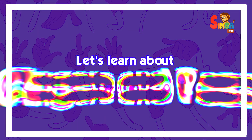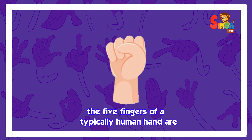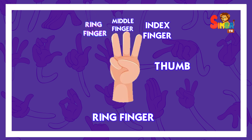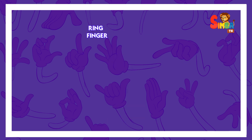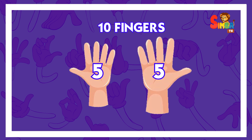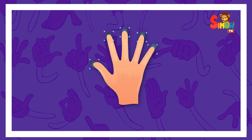Let's learn about fingers and toes. The five fingers of a typical human hand are the thumb, index finger, middle finger, ring finger, and pinky. A human has ten fingers — one hand has five fingers and the other hand has five fingers. Five plus five makes ten.